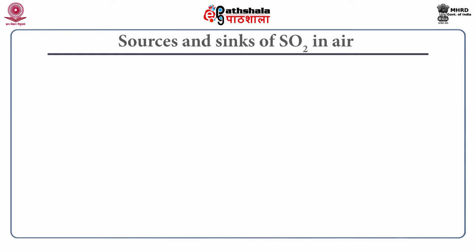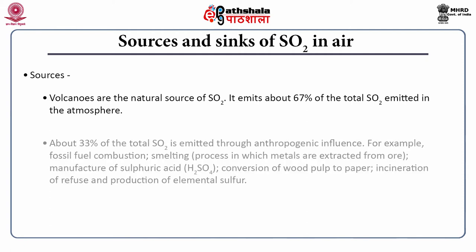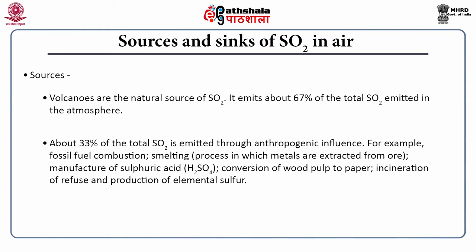Sources and sinks of sulfur dioxide in air: volcanoes are the natural source of SO₂, emitting about 67% of total sulfur dioxide in the atmosphere. About 33% of total SO₂ is emitted through anthropogenic influence — for example, fossil fuel combustion, smelting, manufacture of sulphuric acid, conversion of wood pulp to paper, incineration of refuse and production of elemental sulphur. The sink is conversion into H₂SO₄ in either gas or liquid phase.